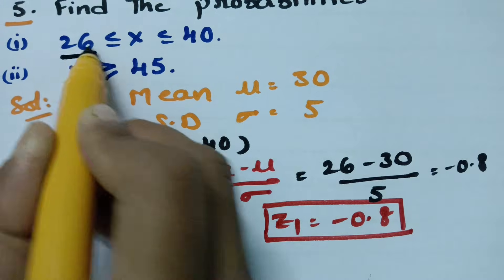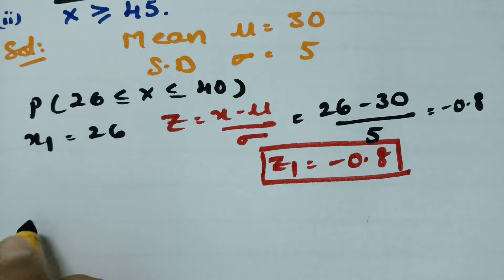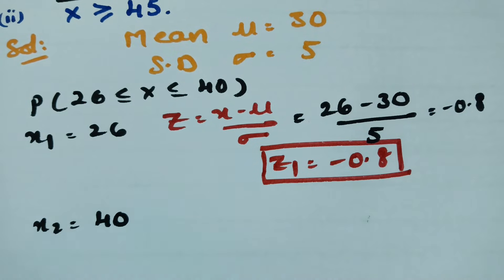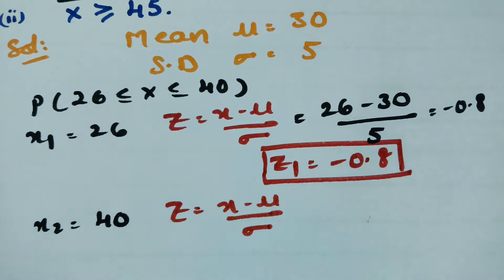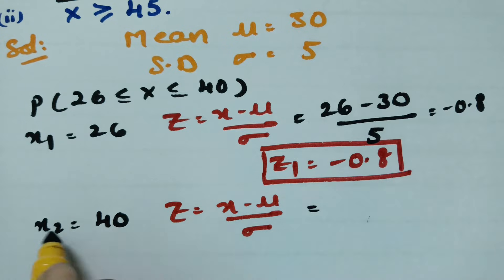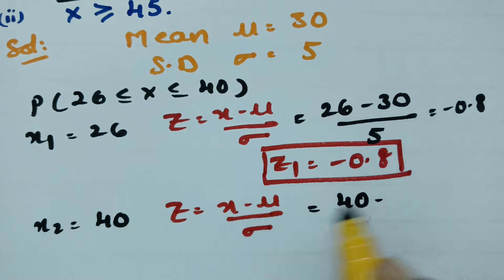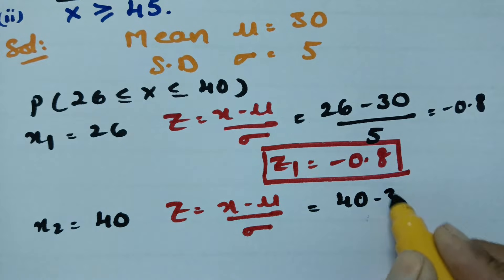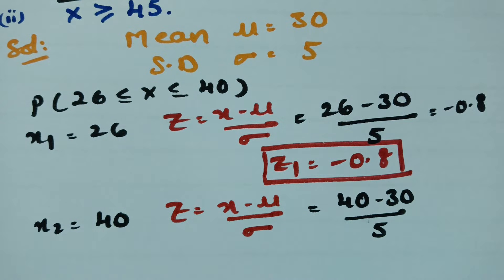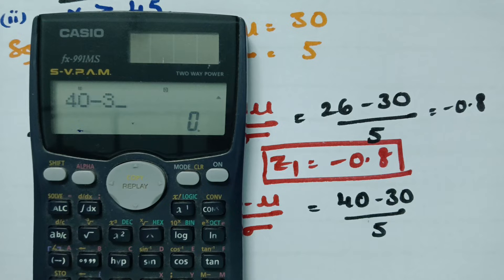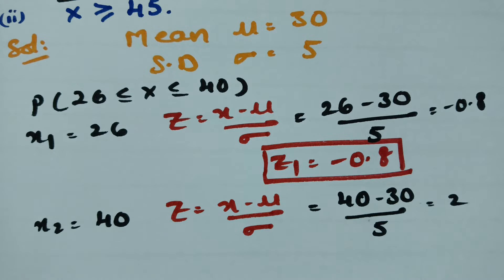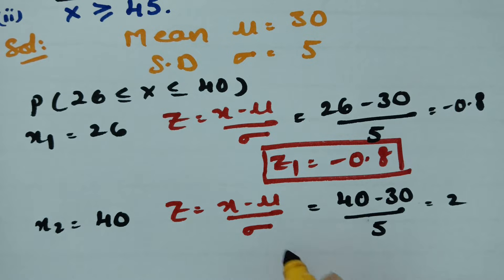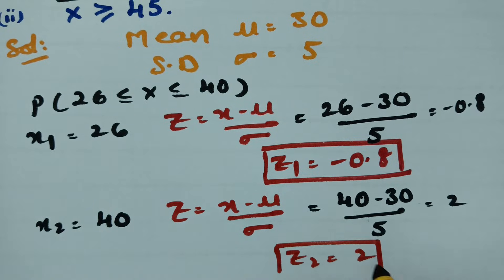Now taking x2 = 40. Substituting in the same formula: z2 = (40 − 30) / 5 = 10 / 5 = 2. So z2 = 2.